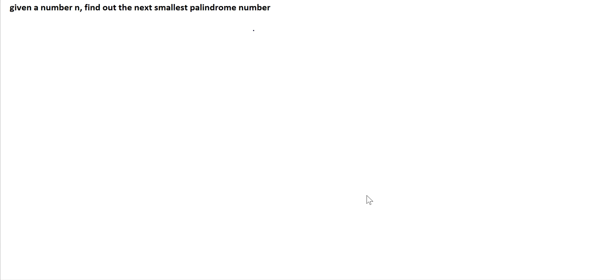What we are going to discuss today is: given a number n, we need to find out the next smallest palindrome number. So if the number is 24, the next smallest palindrome number is 33. If the input number is 33, the next smallest palindrome number is 44.